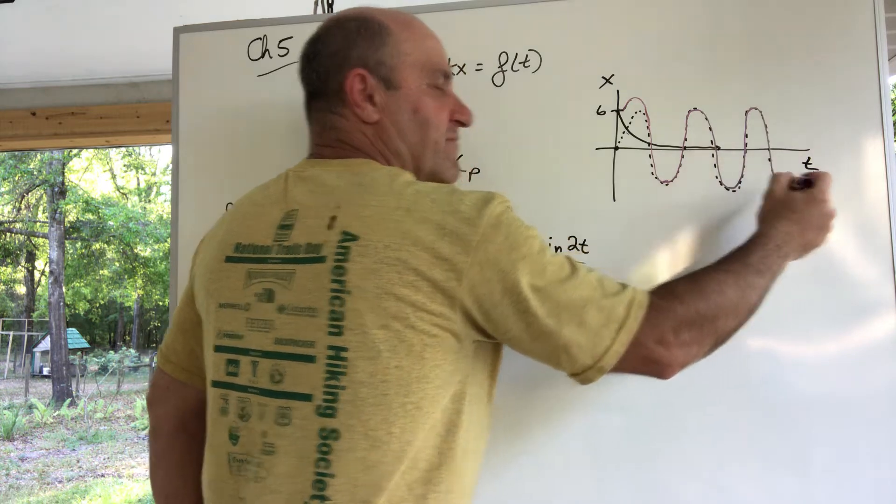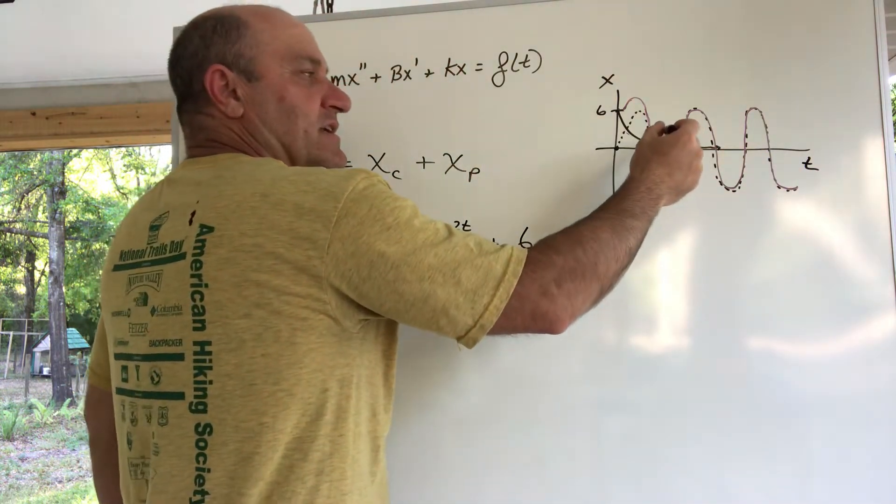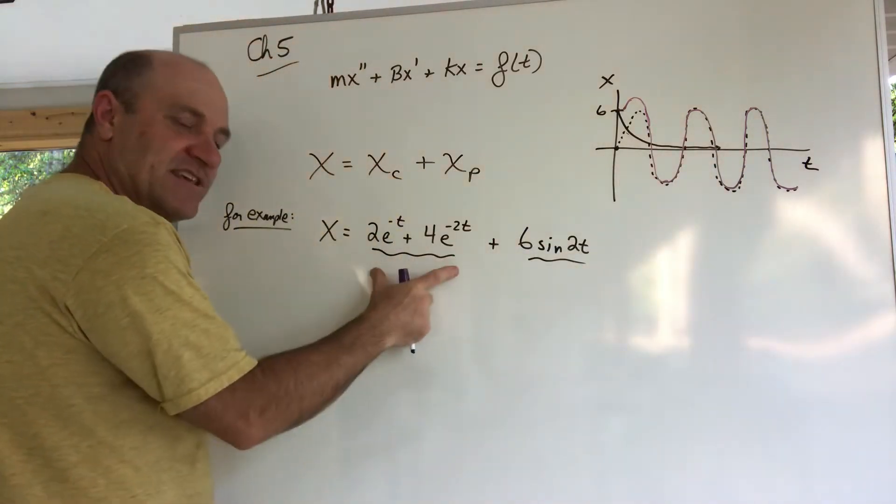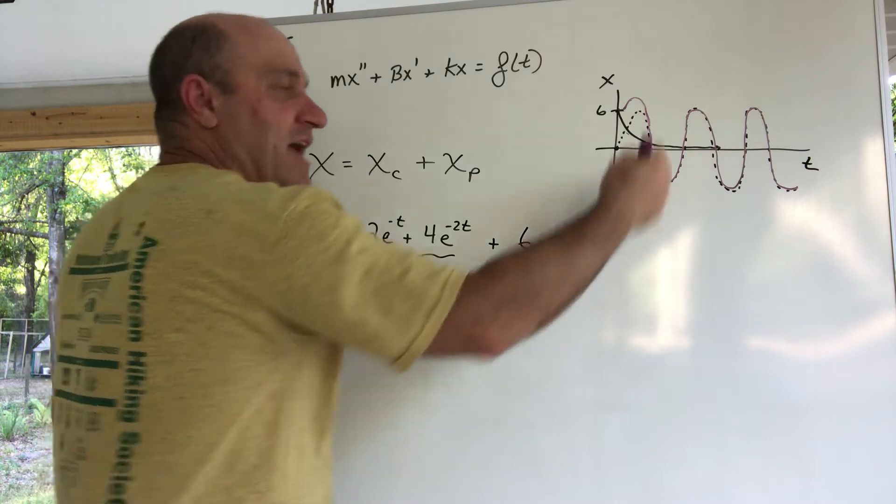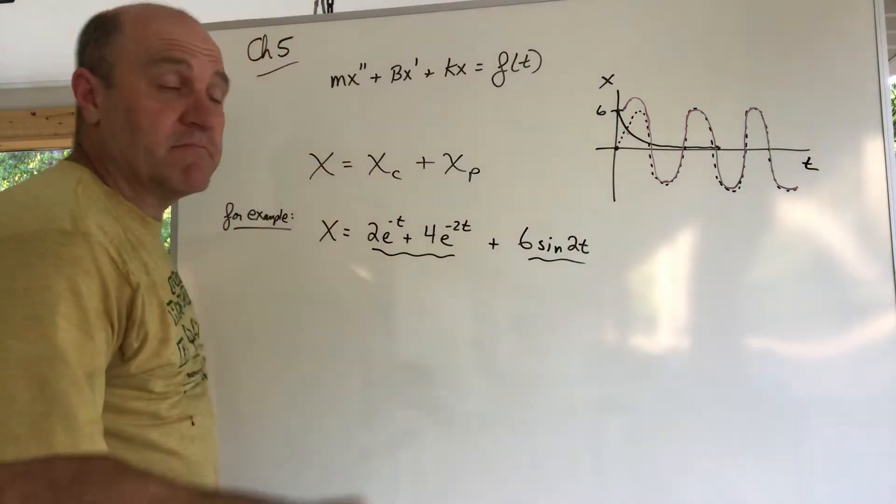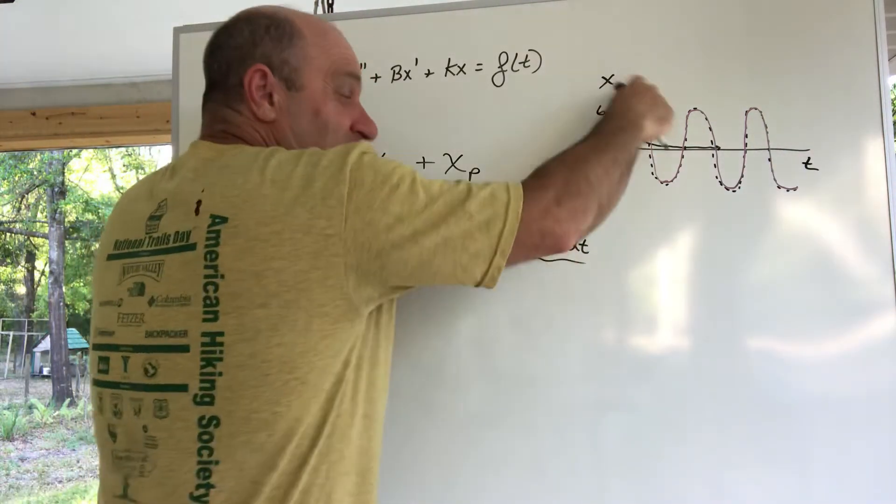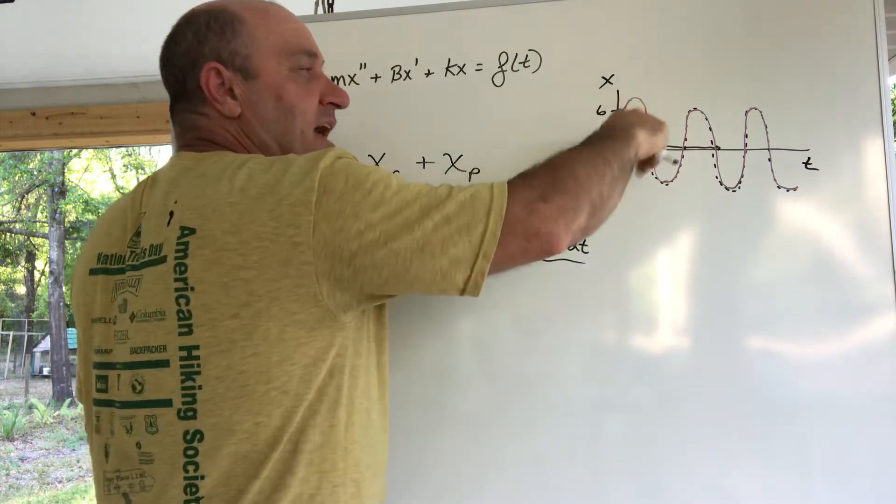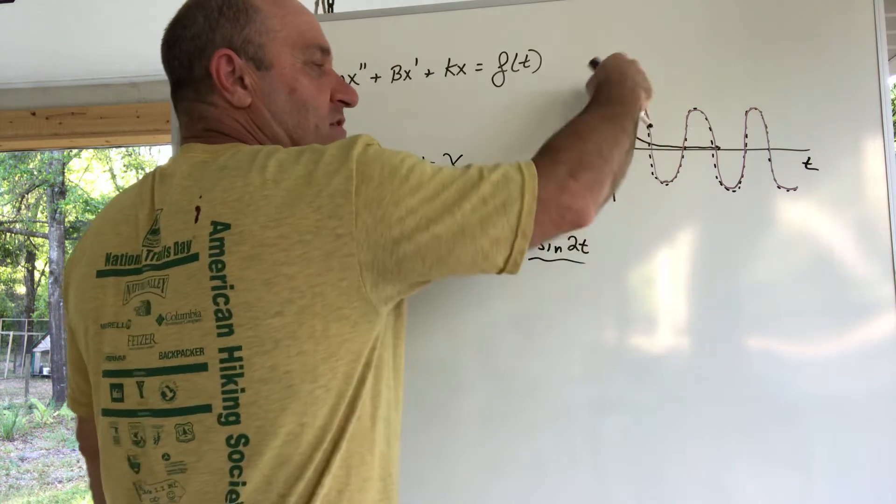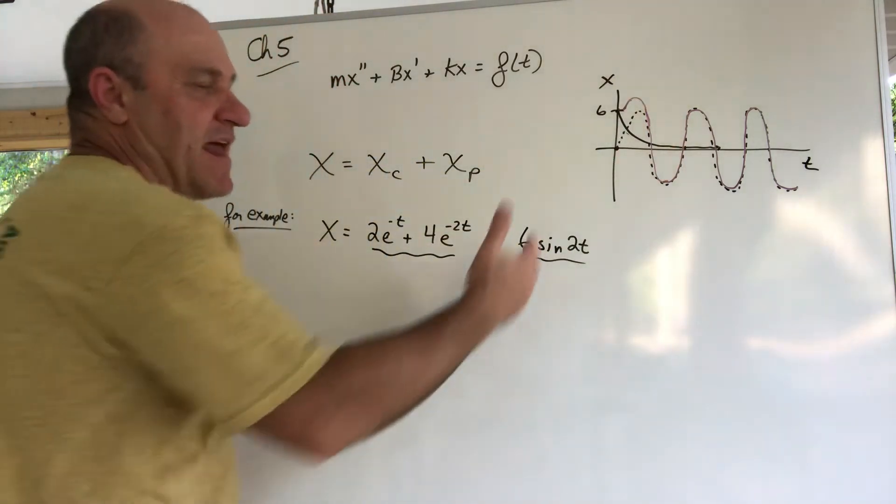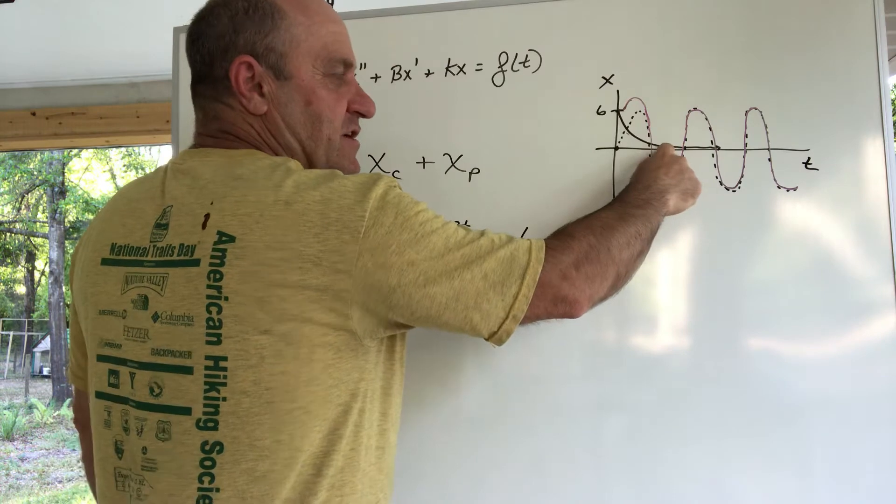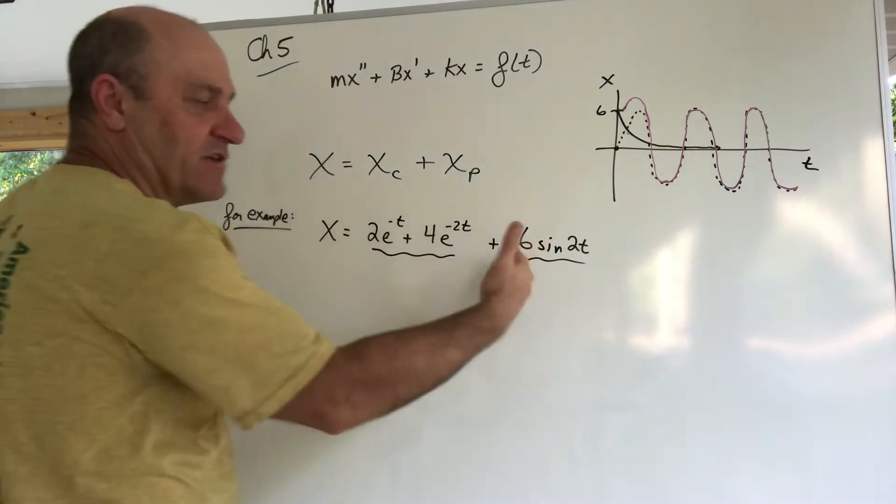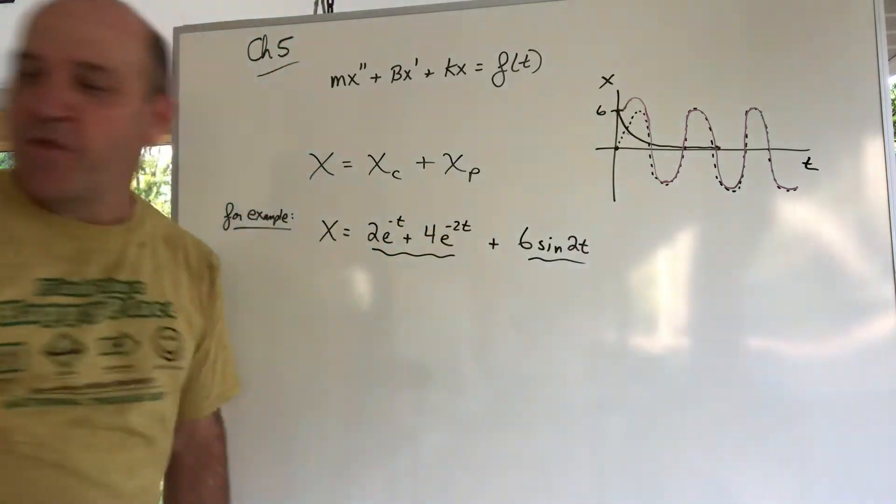The xc goes to zero and the xp ends up being the solution. At the beginning there's a little interference, a little superposition where they add together and create a little bit of motion there. But after that this basically is zero, it's contributing nothing to the answer, and the entire x really just looks like the xp.